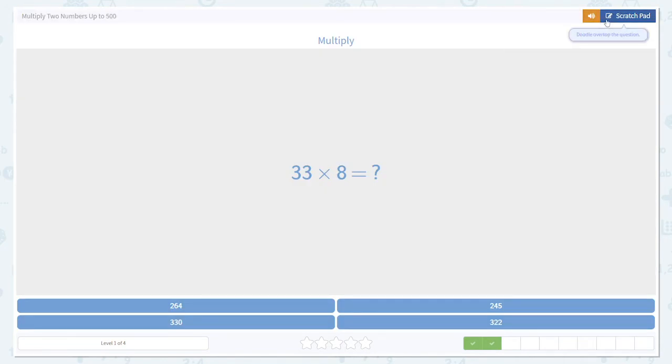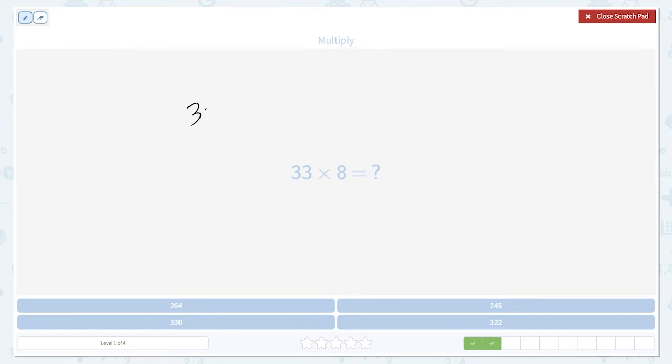Here's another example. Big number on top. 33 times 8. 8 times 3 is 24. Write down the 4. Carry the 2. 8 times 3 again is 24 again. Plus 2 is now 26. 26. So we can write down our 26, and we're done. 264.